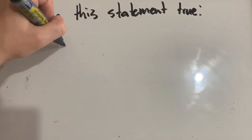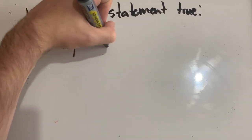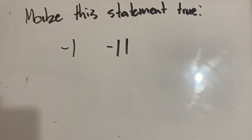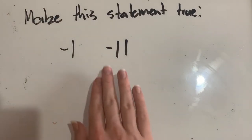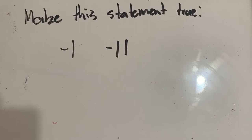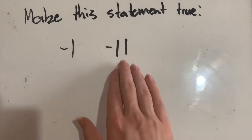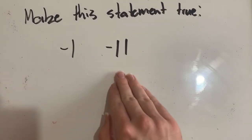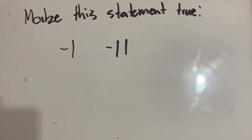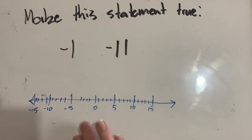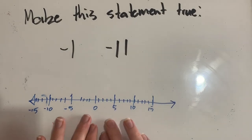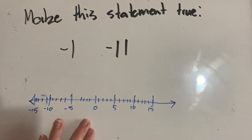Let's try a problem: make this statement true — negative one and negative 11. Now we might think that negative 11 is bigger because 11 is a bigger number, but this is not 11 and this isn't one — this is negative 11 and this is negative one. We might want to imagine a number line. I've got a number line here with zero in the middle, negative numbers to the left and positive numbers to the right.